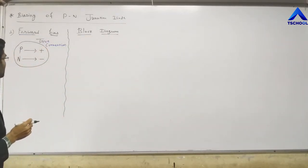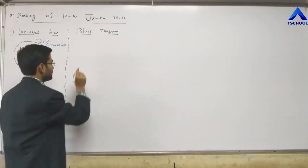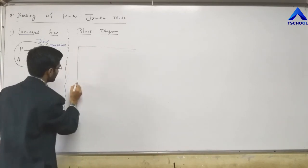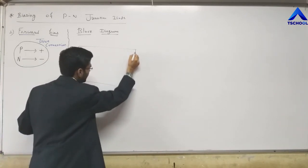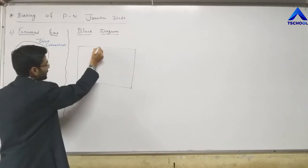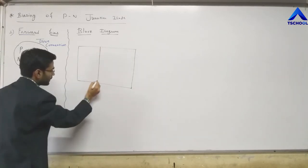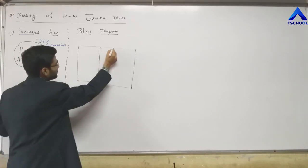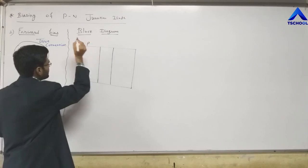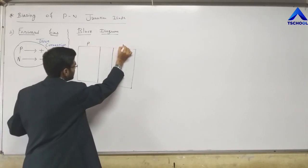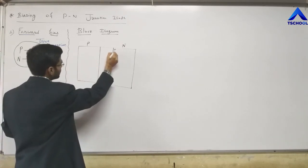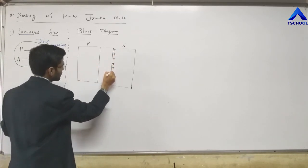In the PN Junction Diode, we have one P-type and one N-type semiconductor. Between them, one layer is created — that is the depletion layer. In P-type semiconductor, the majority carriers are holes, represented by circles, and minorities are electrons. In N-type semiconductor, majorities are electrons and minorities are holes.